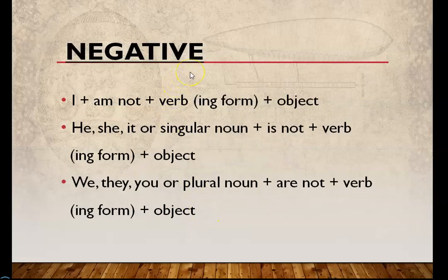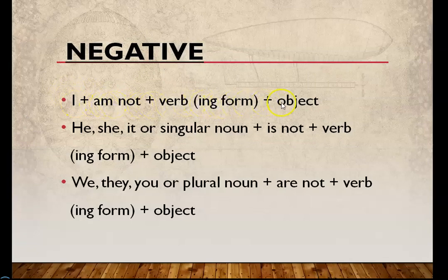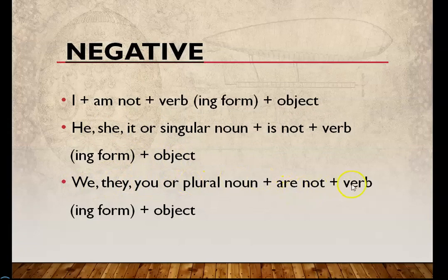Let's look at negative sentences. Remember, negative means no — we only add 'not' to make it a negative sentence. Formula: Subject I + am not + ing form of the verb + object. He/she/it or singular noun: is not + ing form of the verb + object. We/they/you or plural noun: are not + ing form of the verb + object.